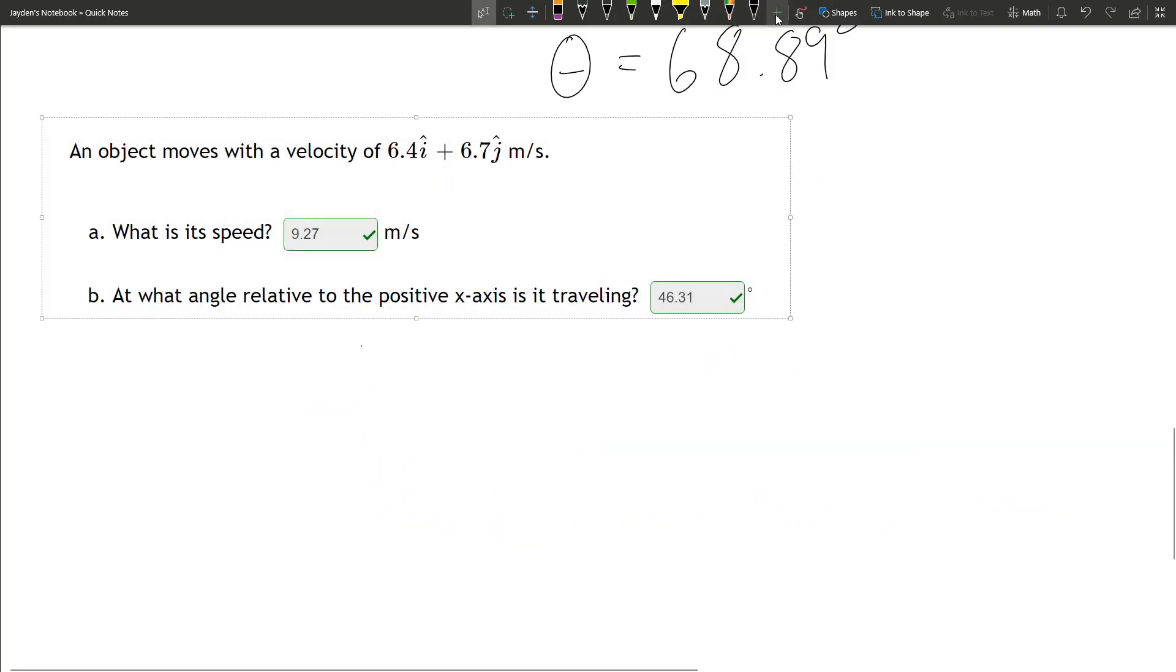For a question like this, it's giving us a velocity and asking for the speed. Because speed is distance, we can just find the hypotenuse and that will be our speed if we're given a velocity vector. And an angle, we just find it.